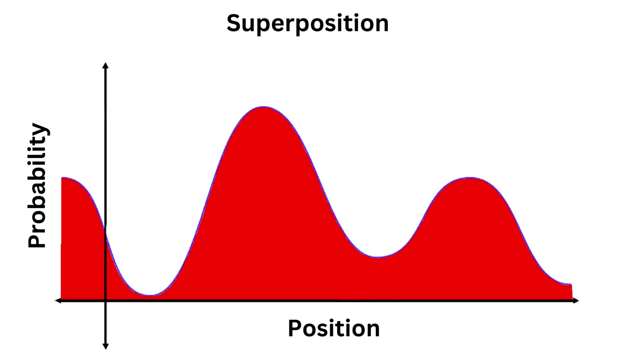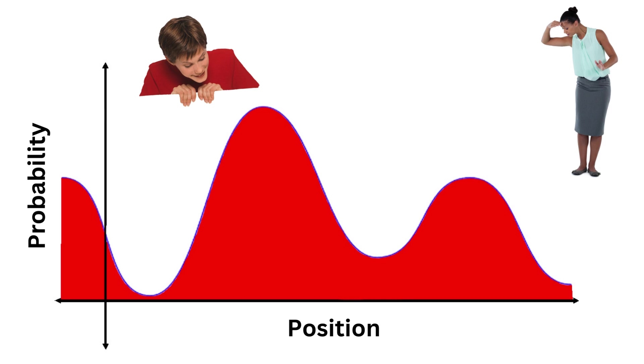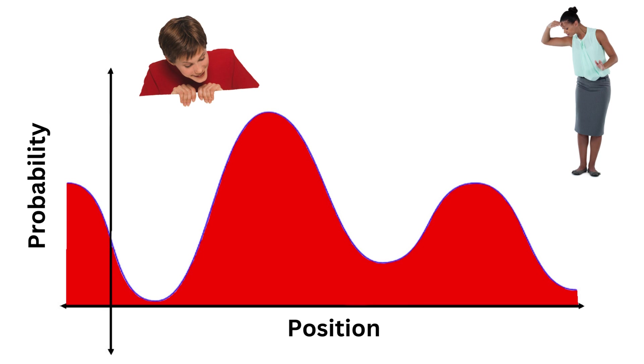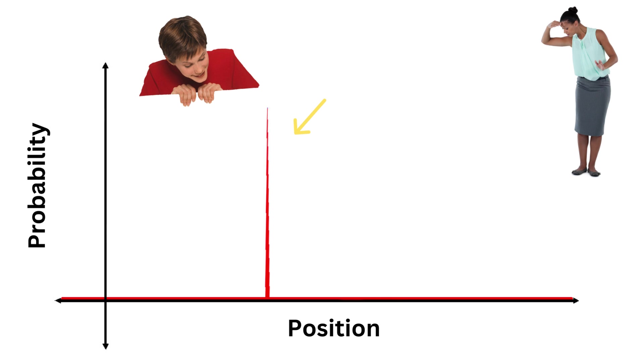However, something intriguing occurs when we observe, or take measurements of the particles. The wave function seems to collapse, into one particular observable state, rather than being in a superposition of many states. In other words, the collapse of the wave function, into a single observable state, seems to happen purposefully, and in a way that the particles want to manifest themselves to the observer.